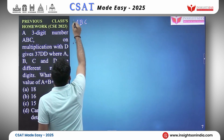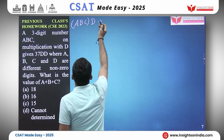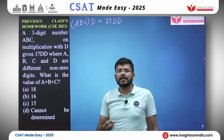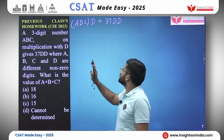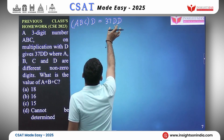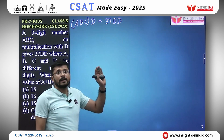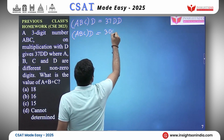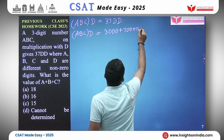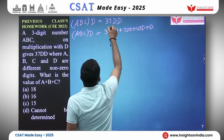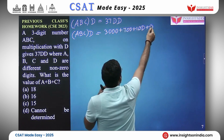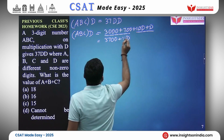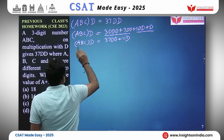ABC is a three-digit number; when multiplied with another single-digit number D, you get a four-digit number 37DD — that is 3700 plus 11D, not 37 times D-squared. So we convert the statement into equation form: ABC times D equals 3700 plus 10D plus D, which simplifies to ABC times D equals 3700 plus 11D.